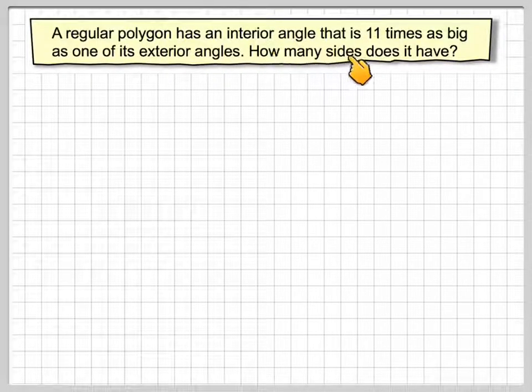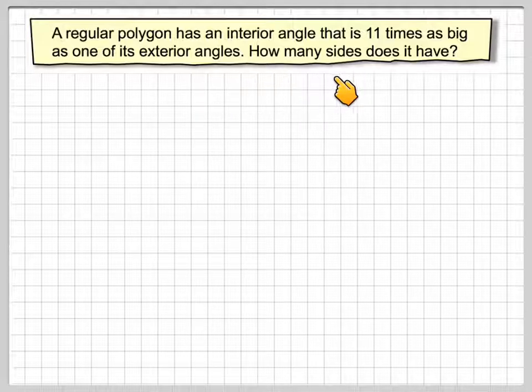A regular polygon has an interior angle which is 11 times as big as one of the exterior angles. How many sides does it have? Let's have a look at this.